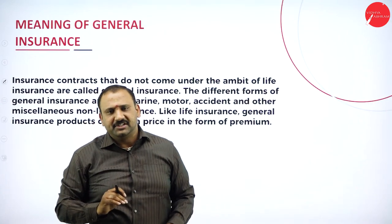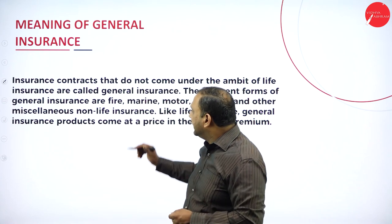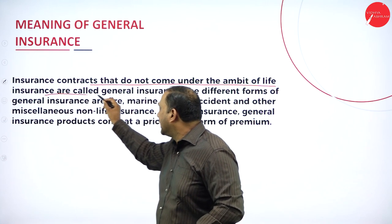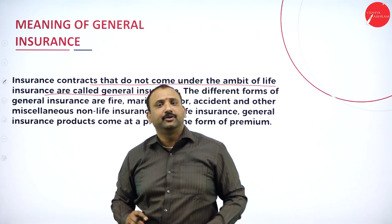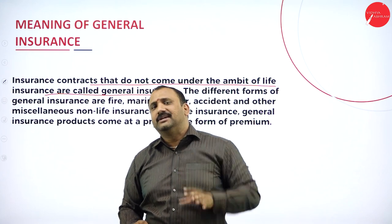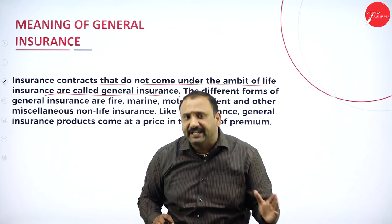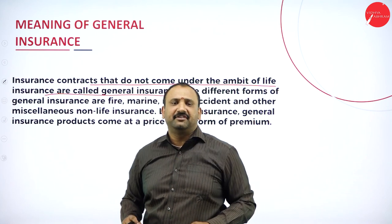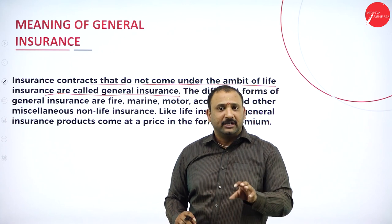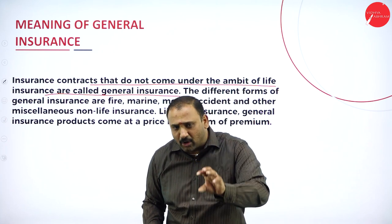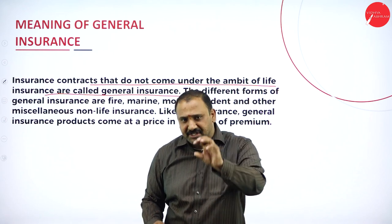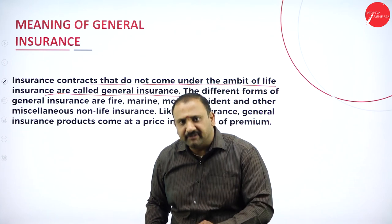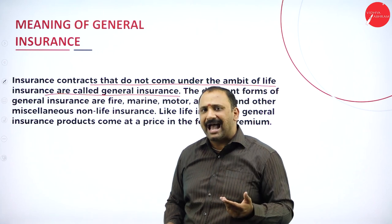Insurance contracts that do not come under the ambit of life insurance are called general insurance — anything other than life that is being covered. Is LIC a part of general insurance? Definitely not. Does a building have a life? Does an automobile, a ship, machinery have a life? Yes — their operational features also need to be protected.